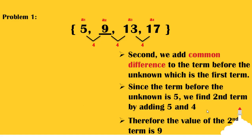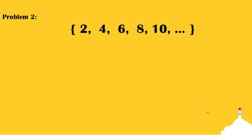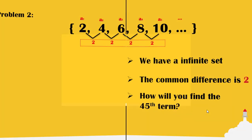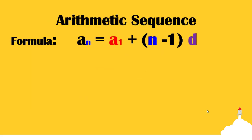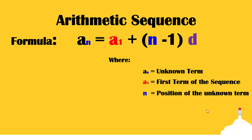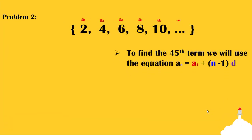Now, let's proceed to problem number 2. We have an example of an infinite set with a common difference of 2. The question is, how will you find the 45th term? Solving this manually would take a long time. To solve this, we would need to use the arithmetic sequence formula: a sub n is equal to a sub 1 plus quantity n minus 1 multiplied by d, where a sub n is the unknown term, a sub 1 is the first term of the sequence, n is the position of the unknown term, and d is the common difference.